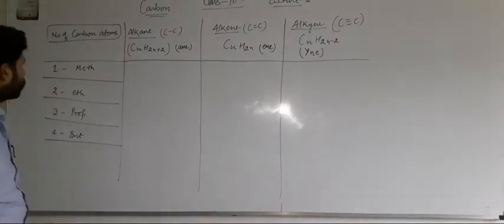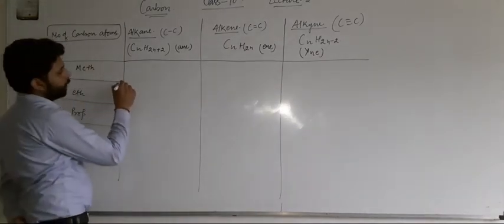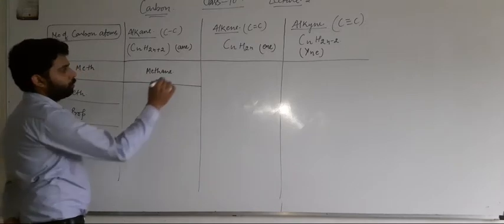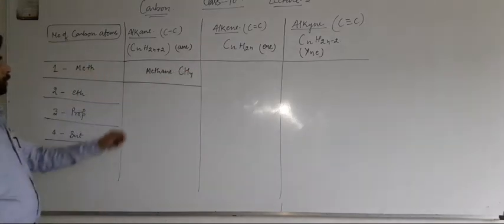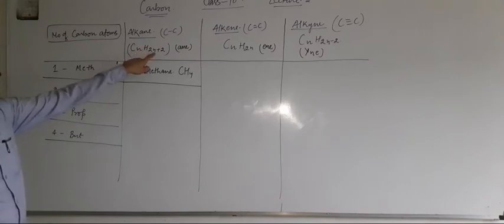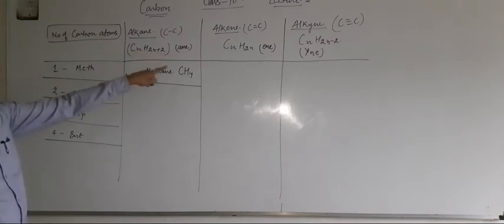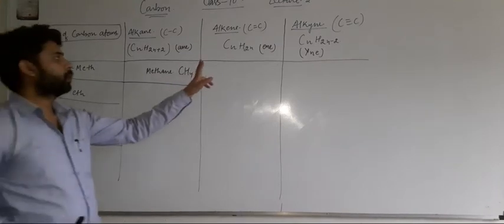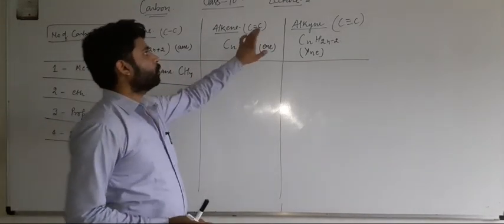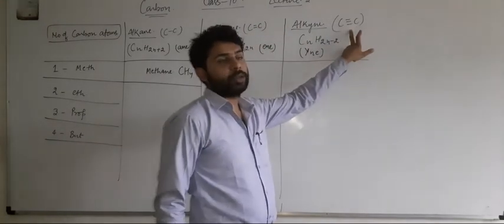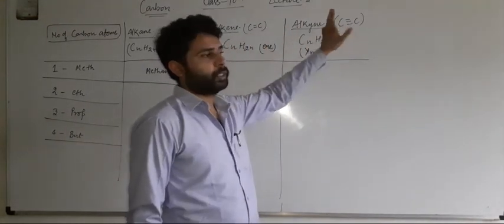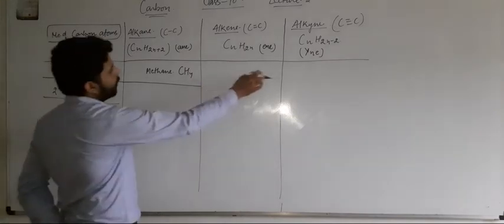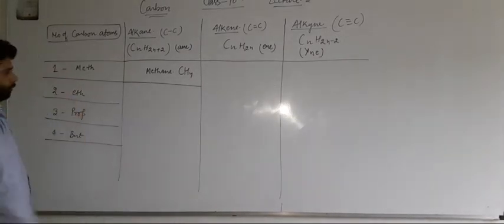So, when we talk about alkane with one carbon, it will be called methane with the formula CH4. C1, H becomes 1, then 2 times 1 plus 2 equals CH4. Now, since carbon atom is only one, it is not possible to form any kind of double bond or triple bond, because for double bond and triple bond structure, you at least need two carbons.